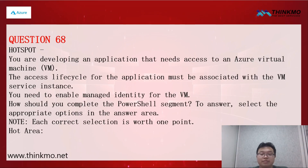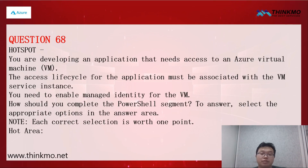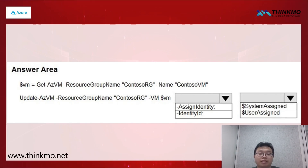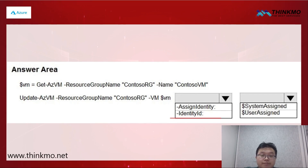Now let's move on to question 68. We're accessing an application on a Microsoft Cloud VM, and its lifecycle must be associated with the VM instance. We need to enable managed identity for the VM. The solution is to use the identity ID to specify the managed identity's ID, and then use the system-assigned managed identity. This allows us to automatically bind it to the VM's lifecycle. That's our answer for question 68.